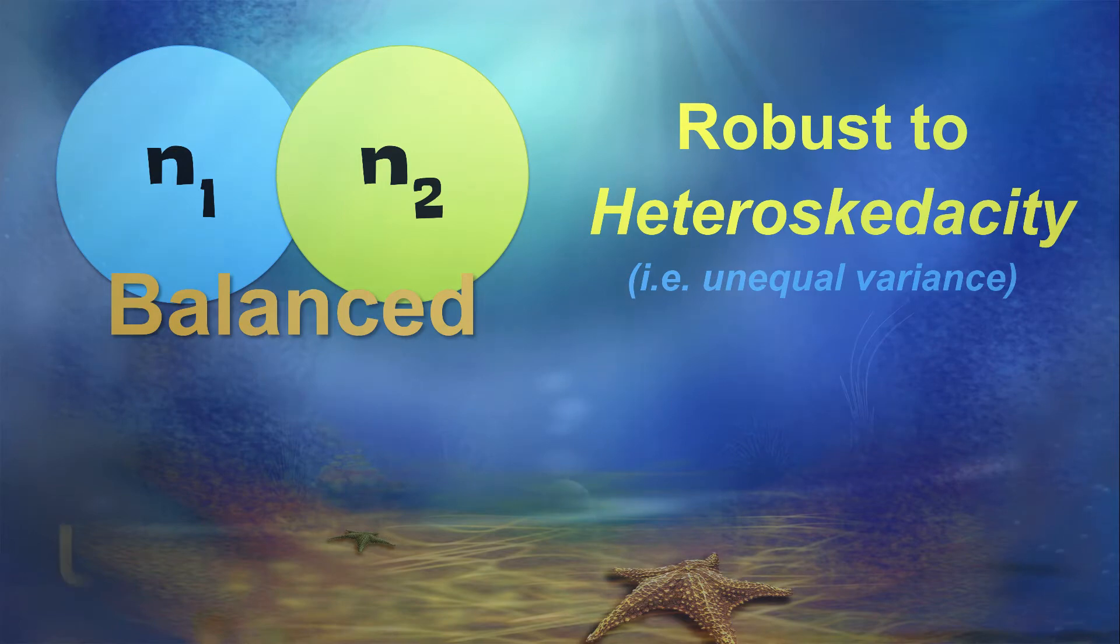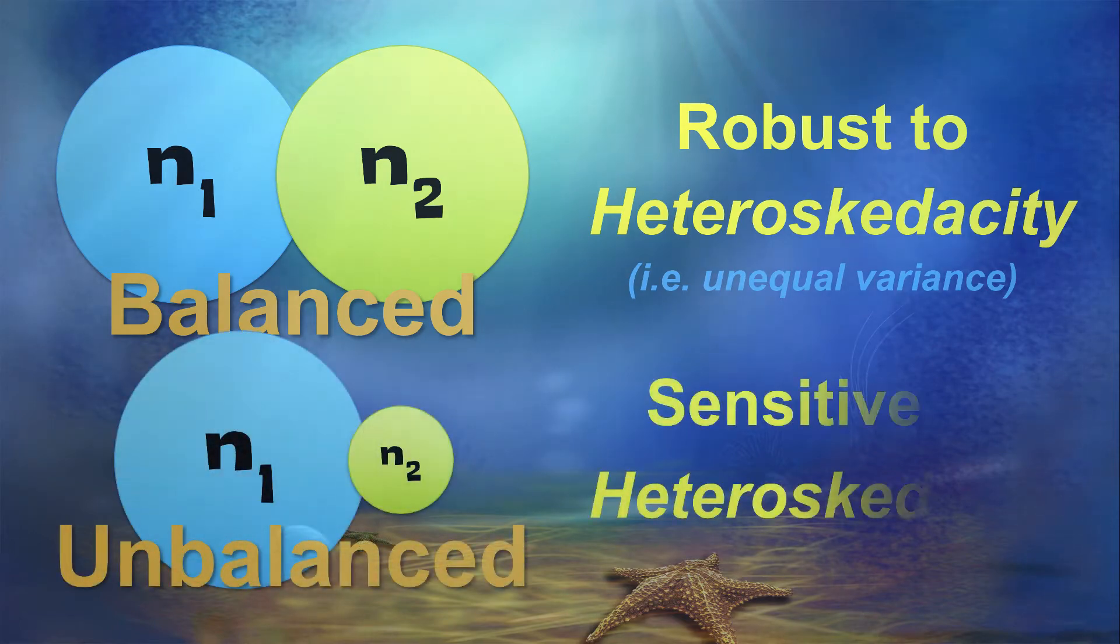But as sample sizes become more unequal, the more that ratio differs from 1, then the t-test becomes increasingly sensitive to heteroscedasticity.